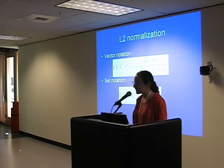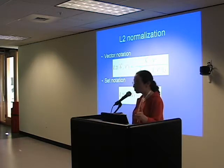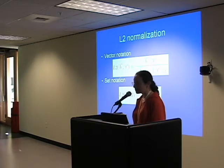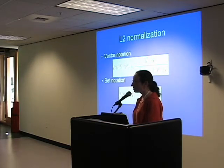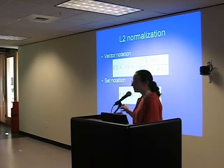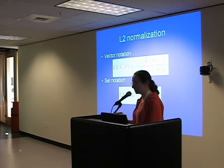Another measure is L2 normalization. In the vector space, this would be the same as the cosine distance. This is the same as L1 except for the square root sign in the denominator — you take the overlap and divide it by the square root of the product. This penalizes large communities less heavily.